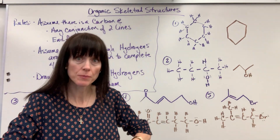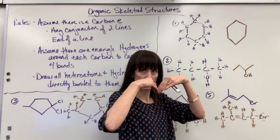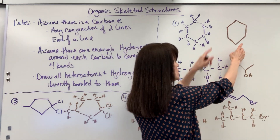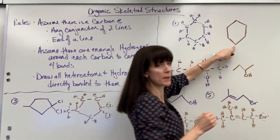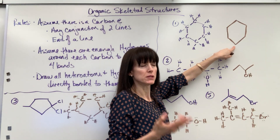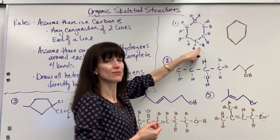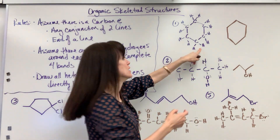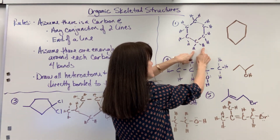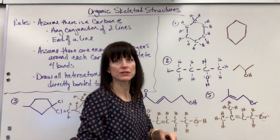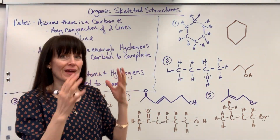For example, if I'm looking at this conjunction right here — those two lines coming together — notice this carbon has two bonds to two other carbons. Two bonds means it needs two more hydrogens. Sure enough, there it is: the carbon is bonded to two carbons, and then there are the two hydrogens to give it a total of four bonds to fill that octet.